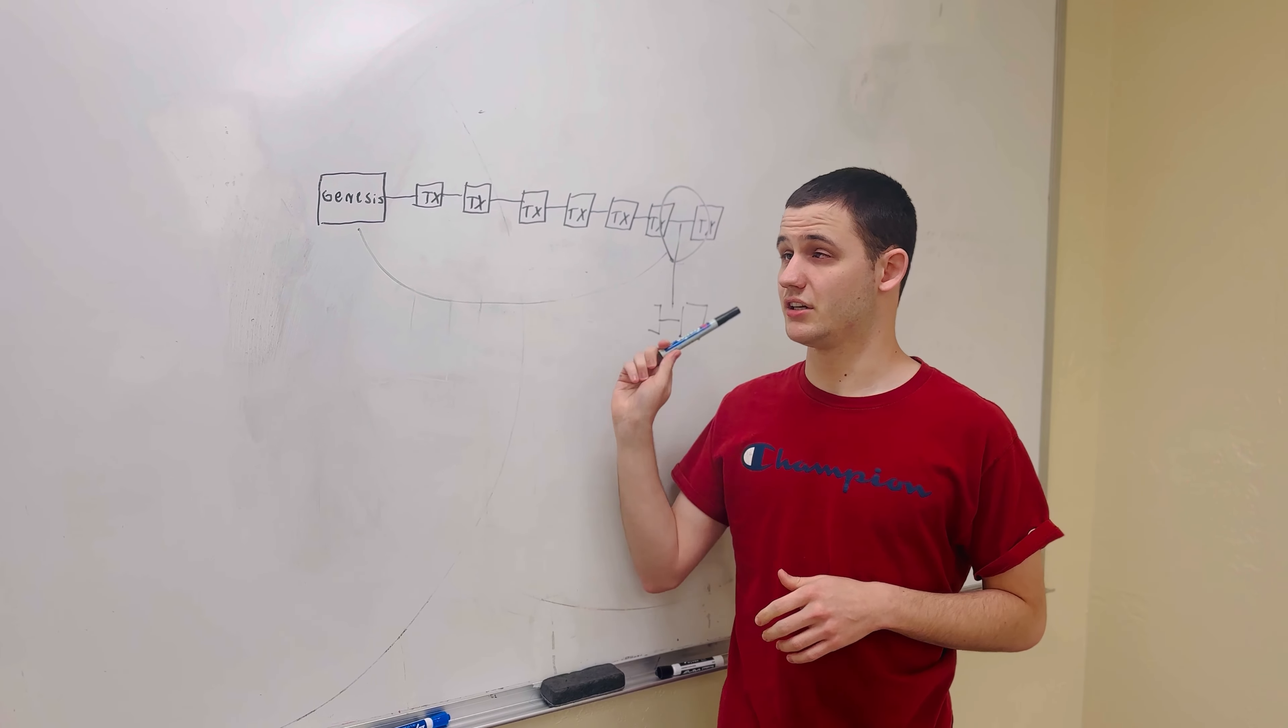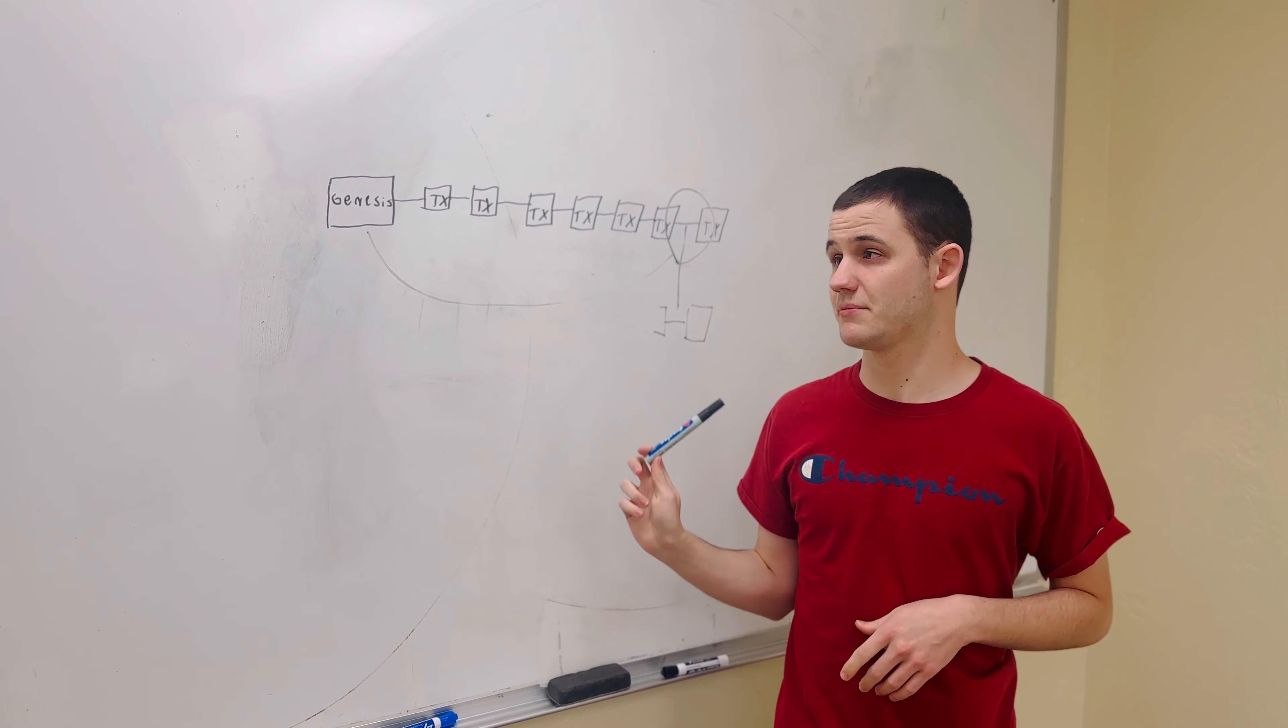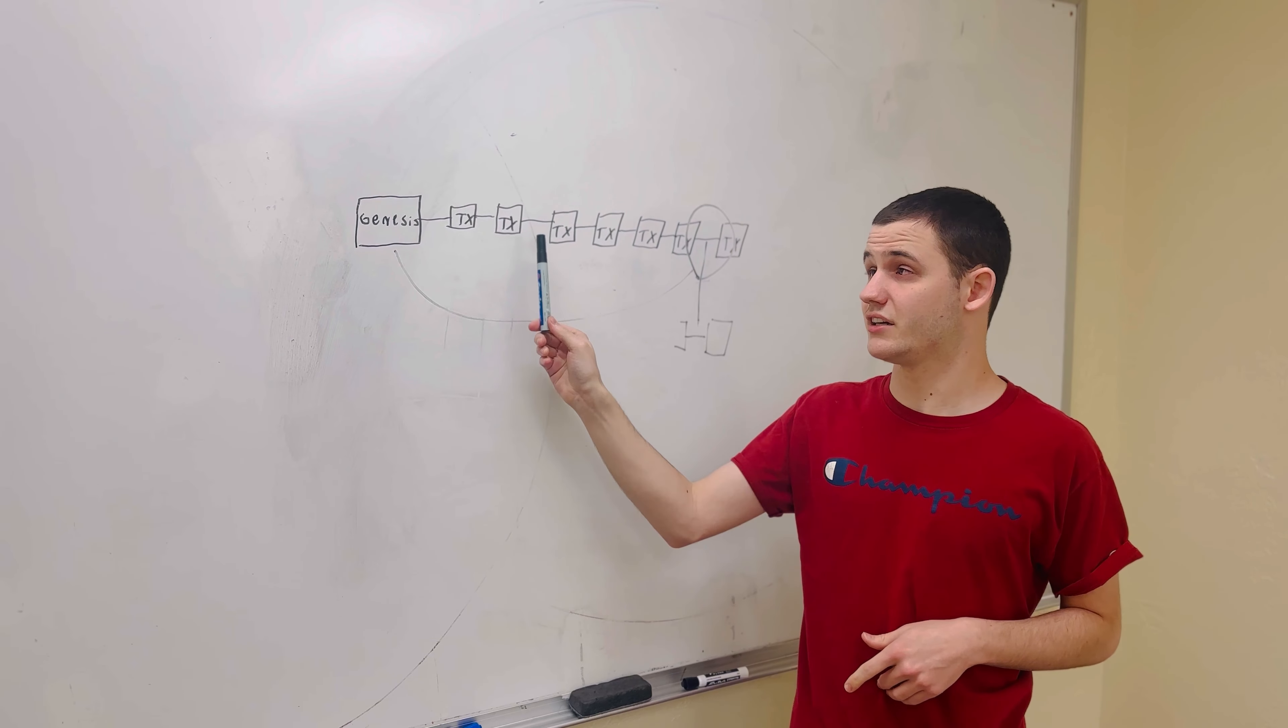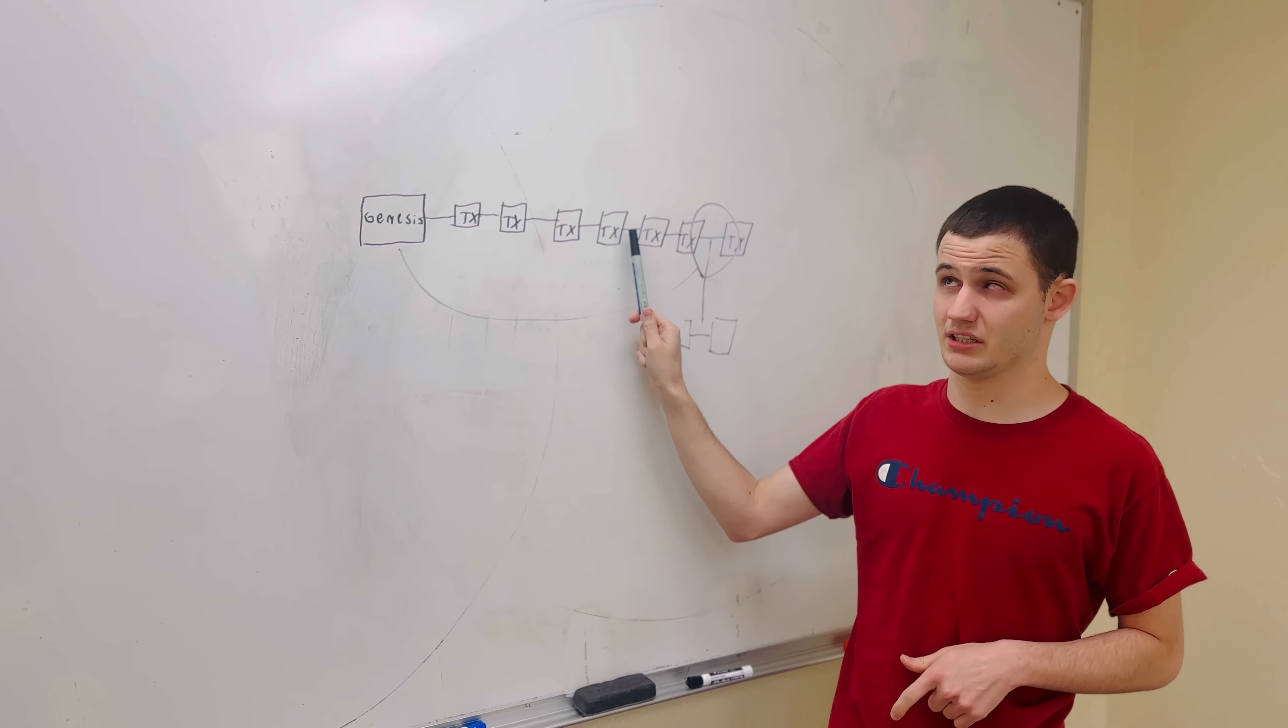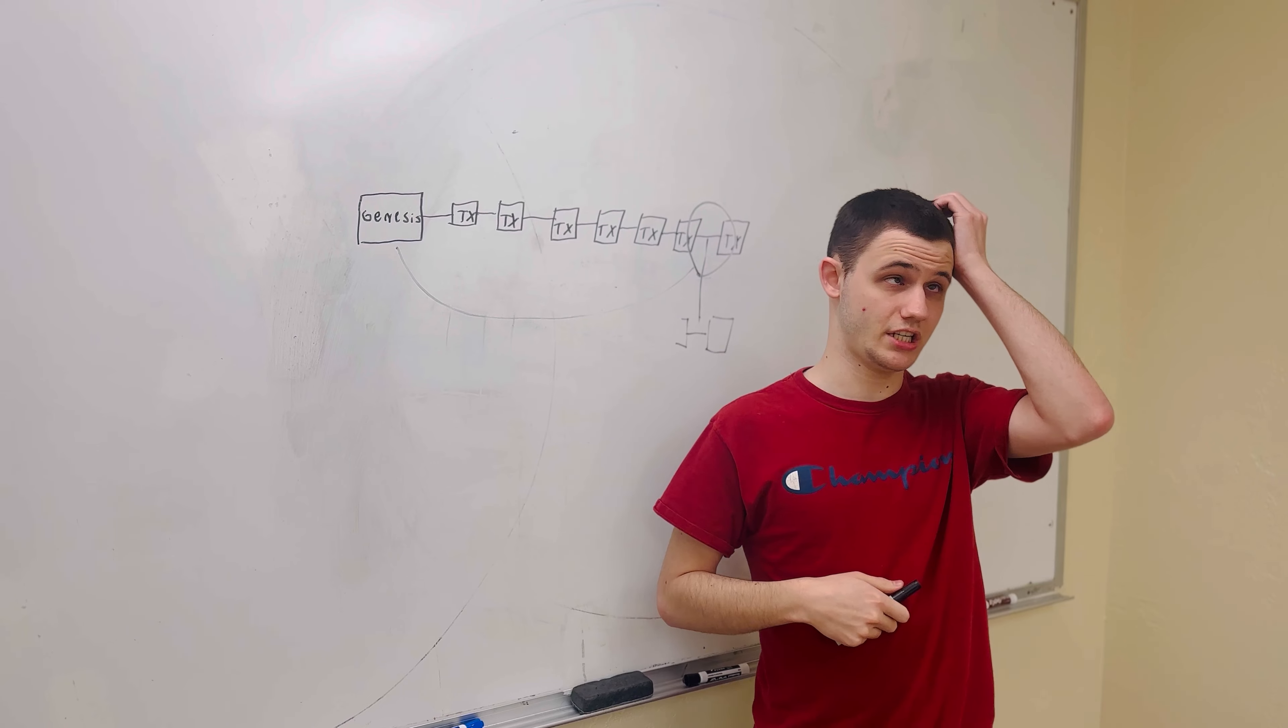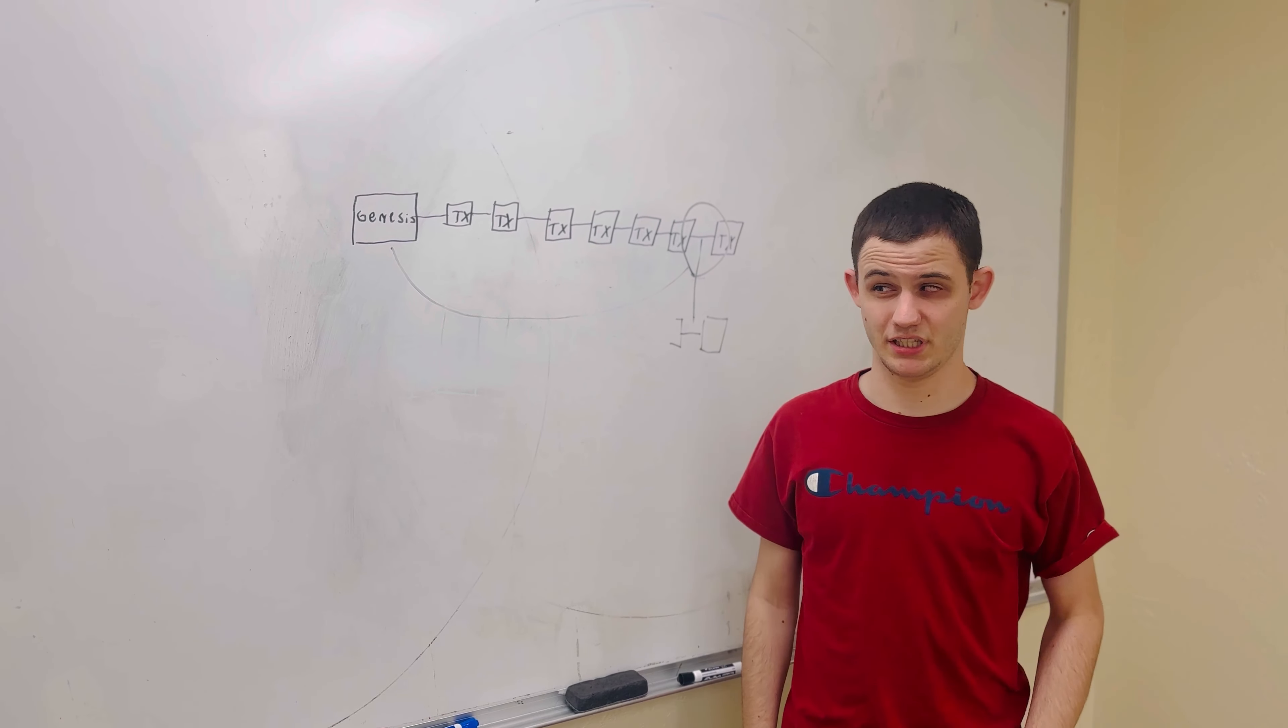So the overlay node knows about the genesis when it originally happens, and then every subsequent transaction is registered with that overlay node so that at each point, the overlay node knows where the current valid token is. And so this allows for each of the parties to check with the overlay node about the validity of particular tokens.